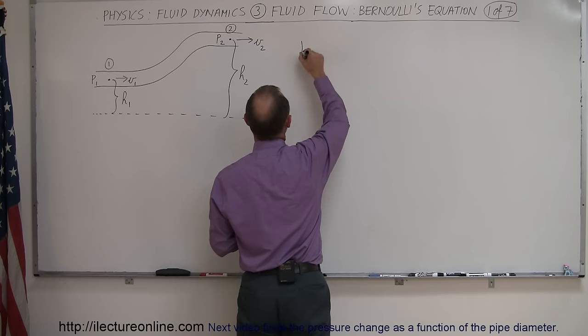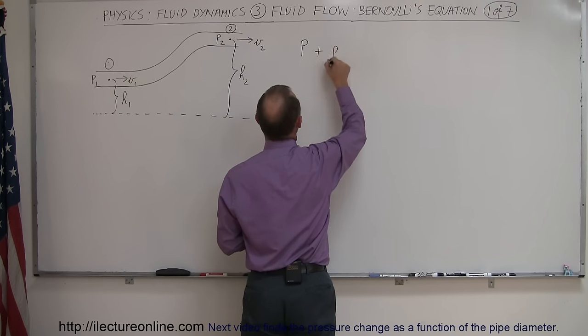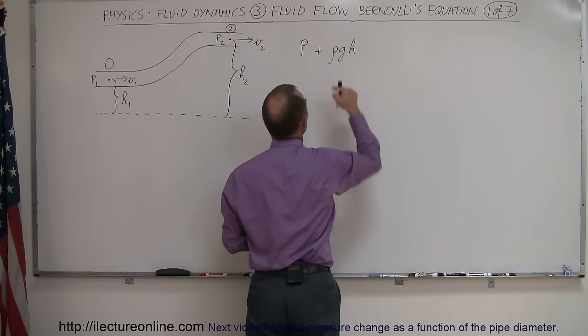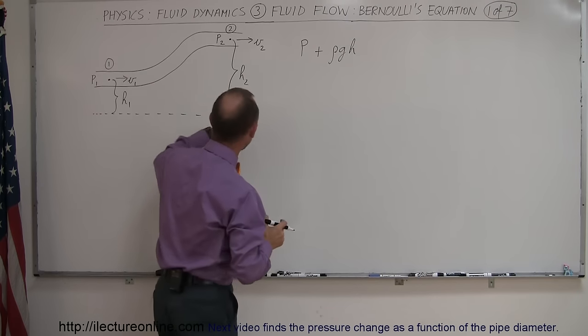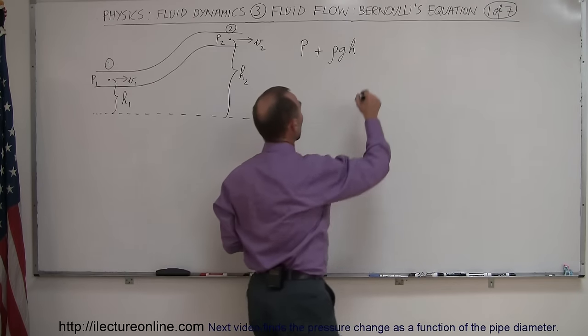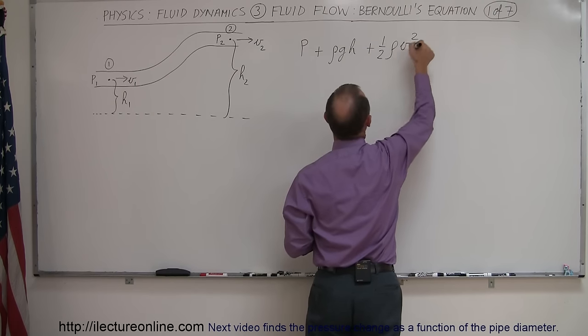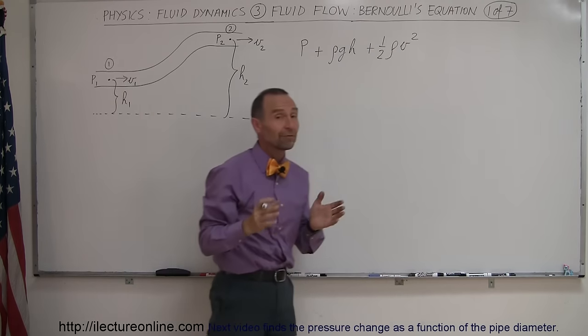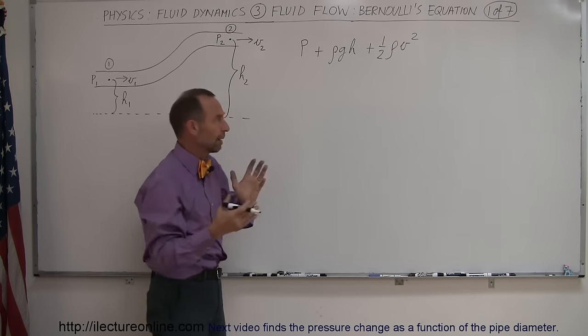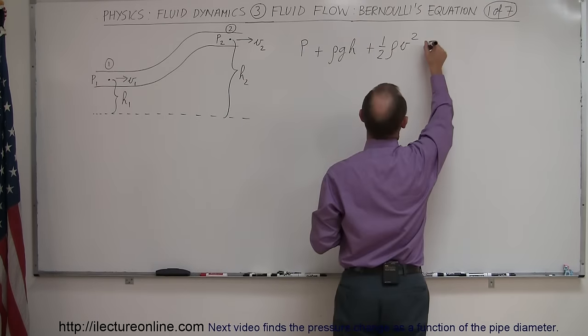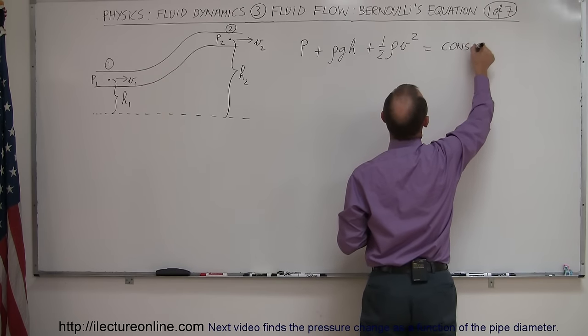But starting out, we're going to say that the pressure at any point inside the pipe plus rho gh of the fluid, now rho would be the density of the fluid, g is of course acceleration due to gravity, and height is the height above some reference point, plus one-half rho v squared. Again, rho is the density of the fluid, and v is the velocity of the fluid through the pipe. And again, it doesn't have to be through a pipe, but for simplicity, let's start there. And he said that those three terms combined are always constant.